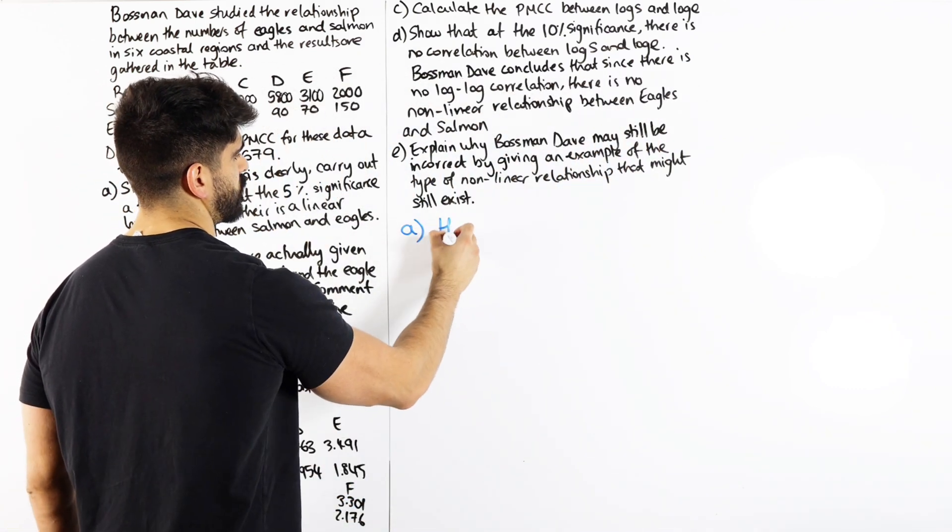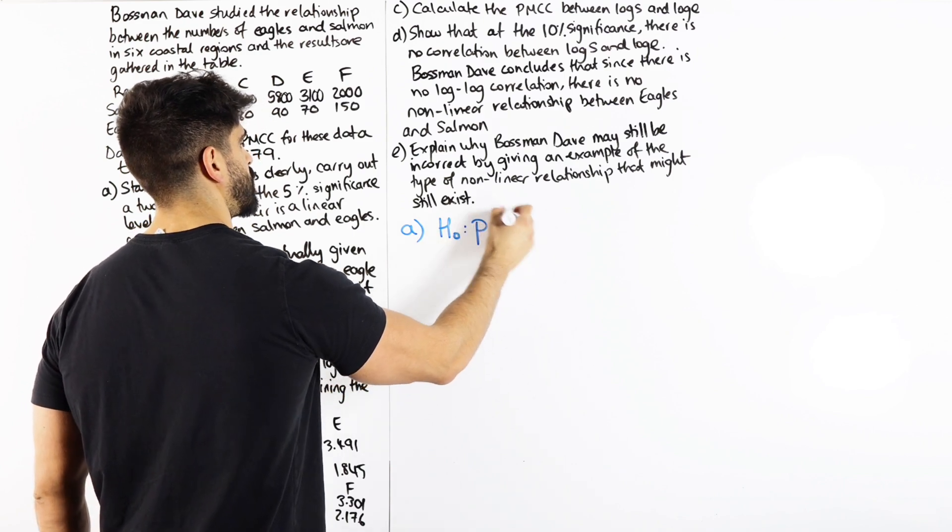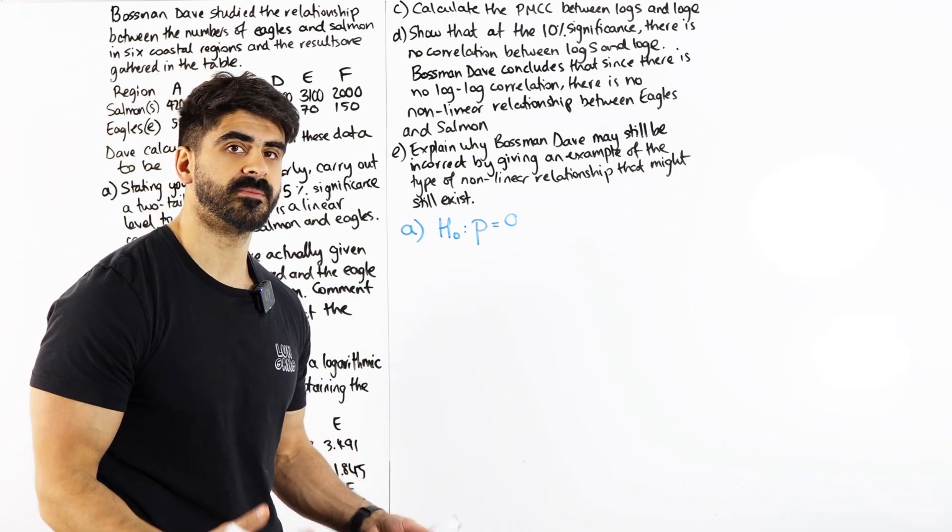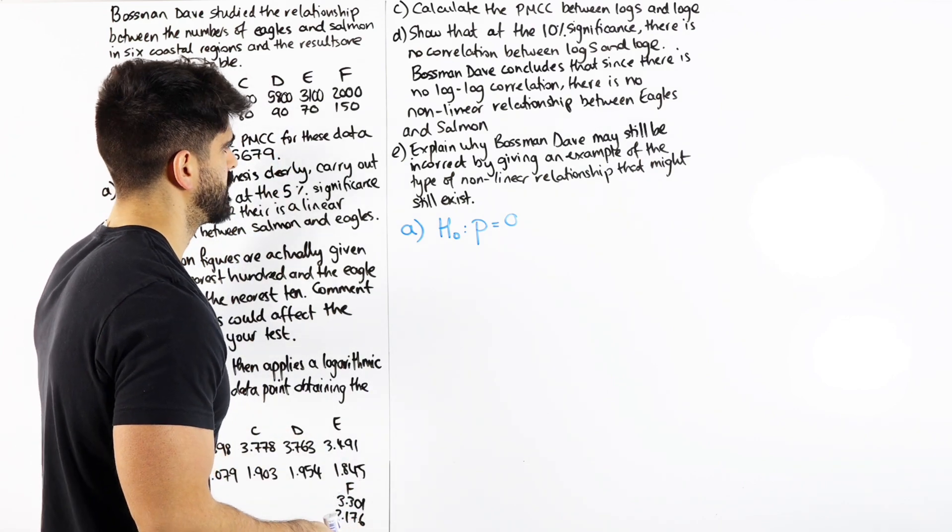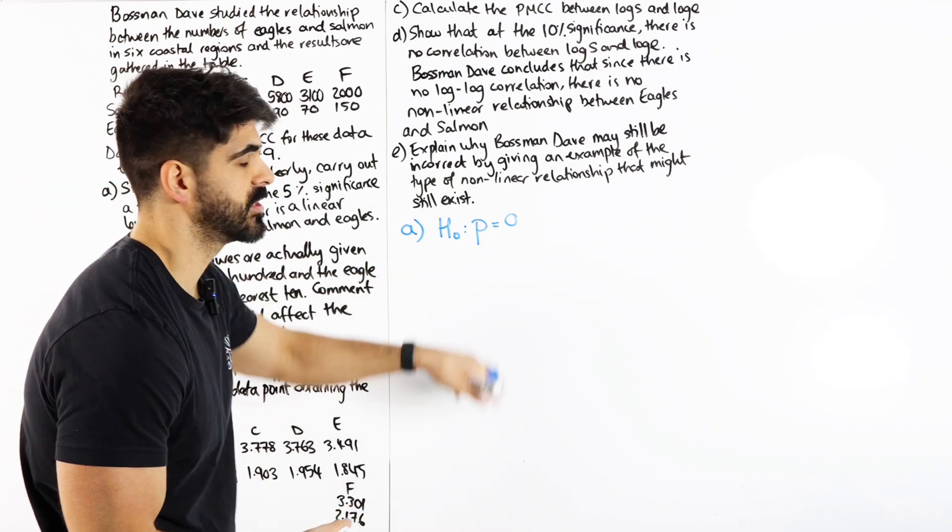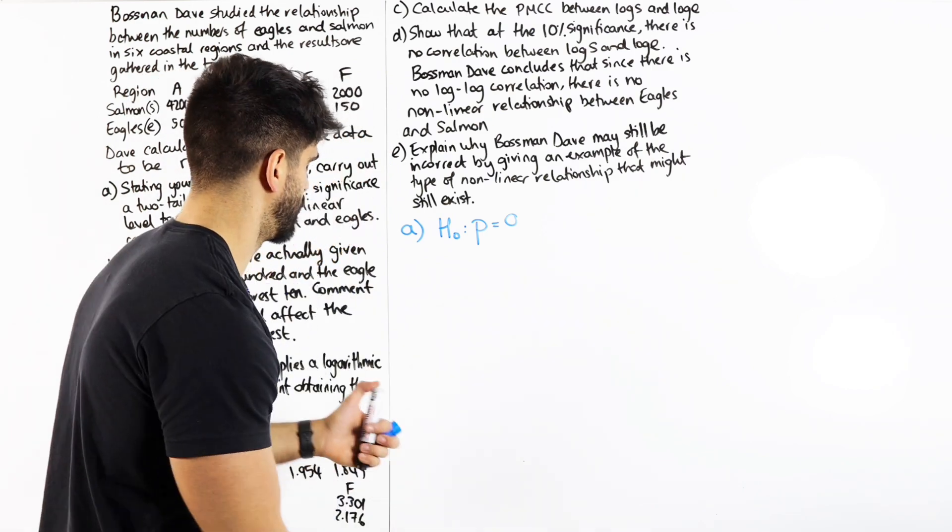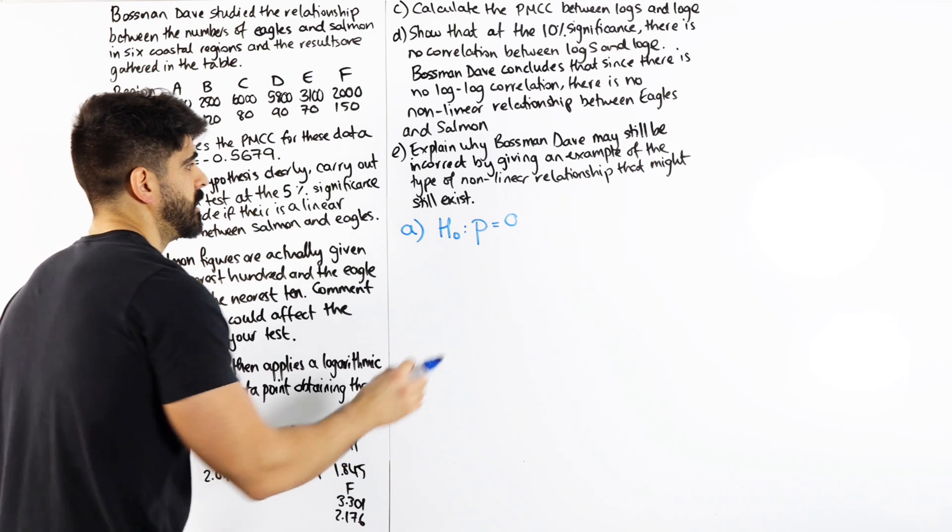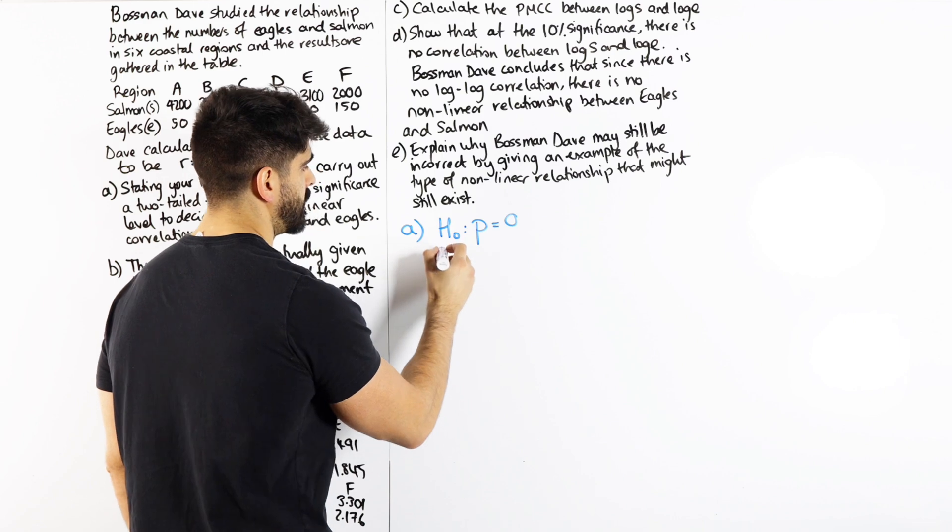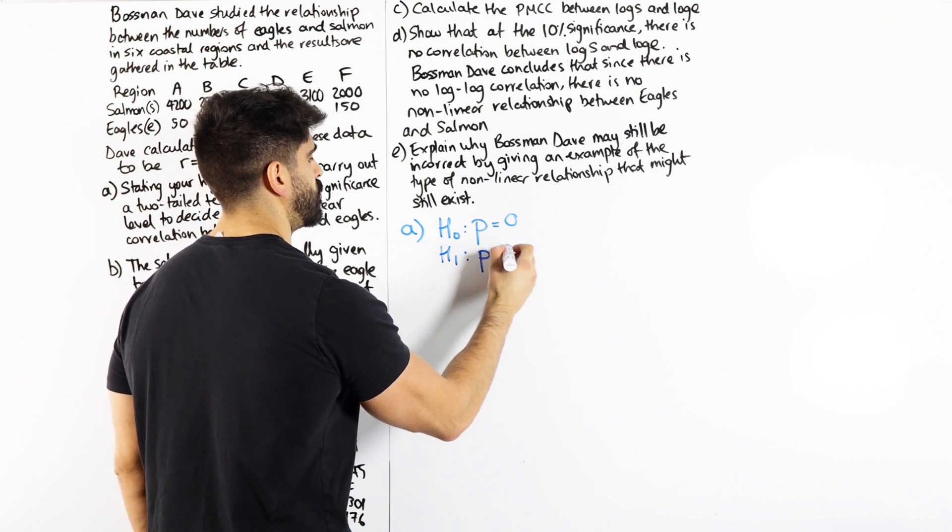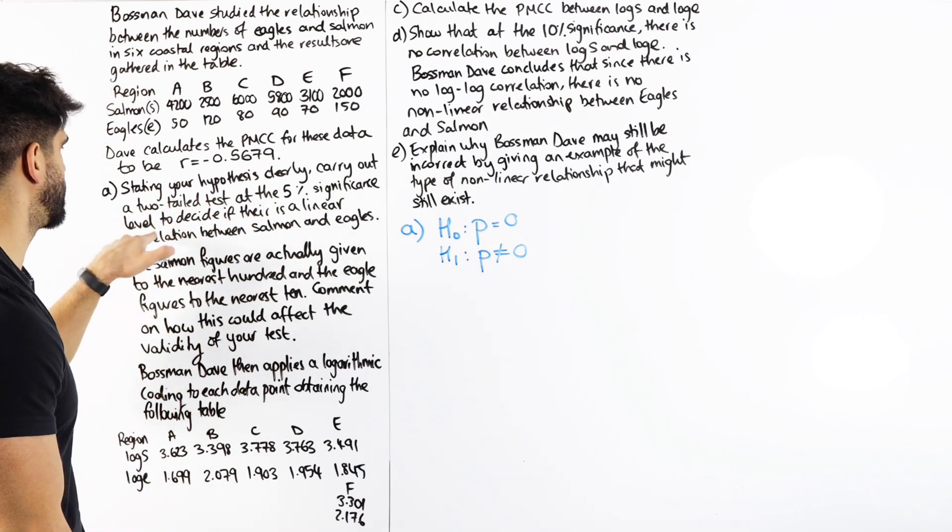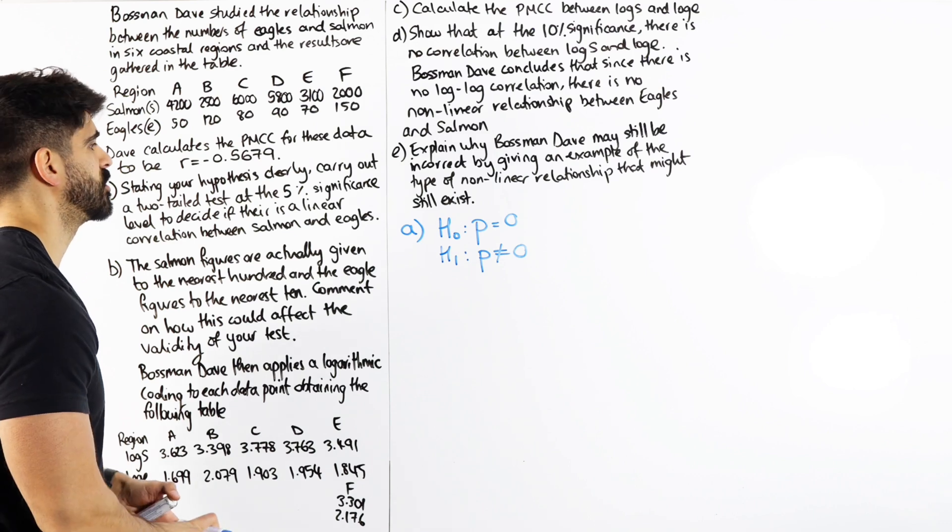Stating your hypothesis clearly, carry out a two-tailed test at the 5% level of significance to decide if there's a linear correlation between the salmon and eagles. The first thing we do is we state our H0. H0 is that we assume the population coefficient is 0. When we talk about R, the PMCC, that is talking about the sample. The sample is supposed to represent the overall population. So this is our population constant. Some of you guys might know it as rho, but let's just keep it simple. I'm just going to write P. P equals 0 is the equivalent of saying R equals 0, no correlation between the two values.